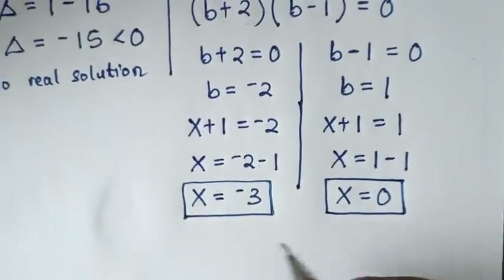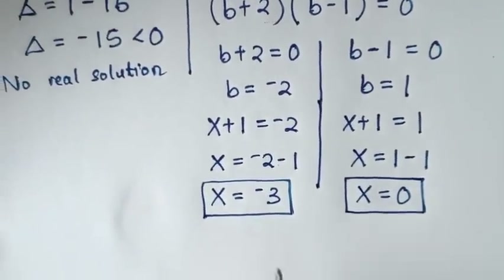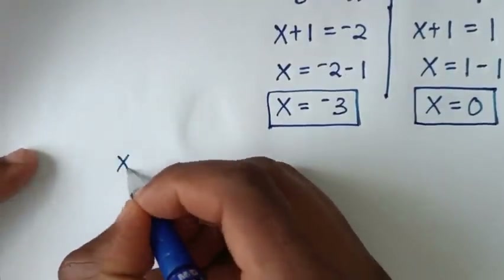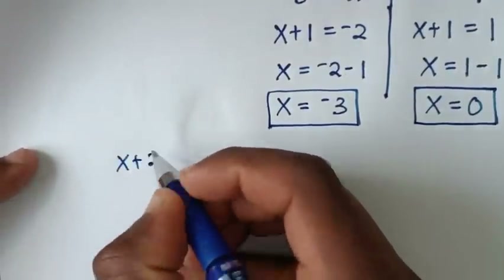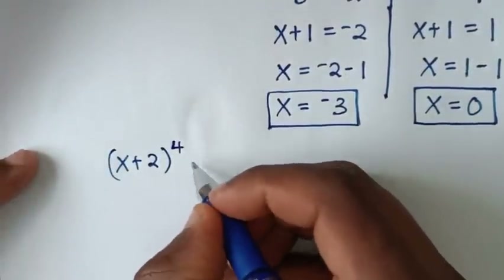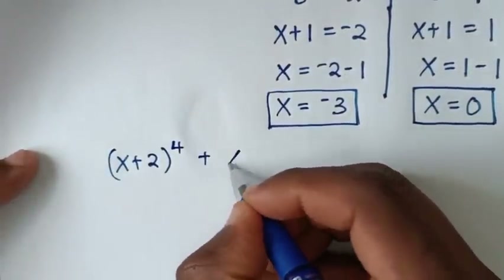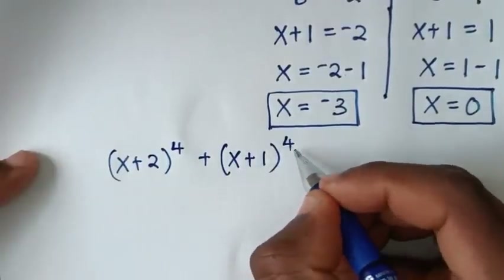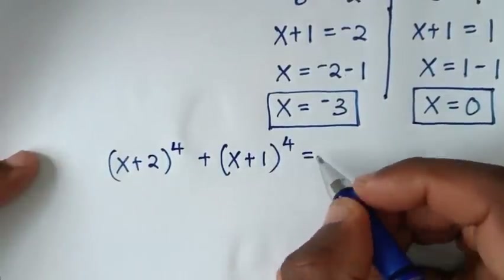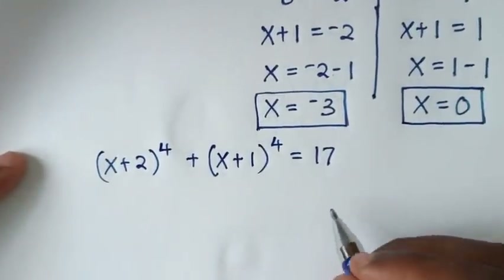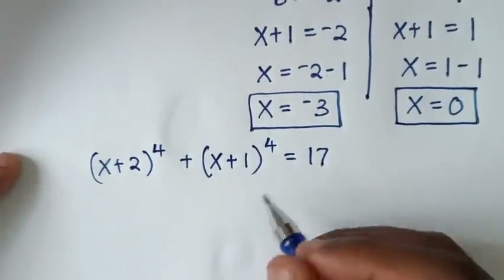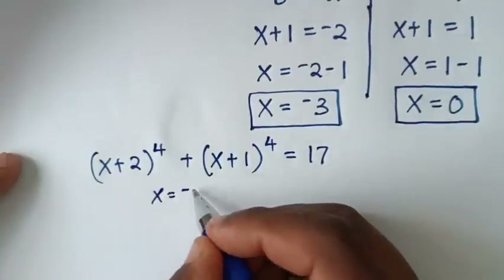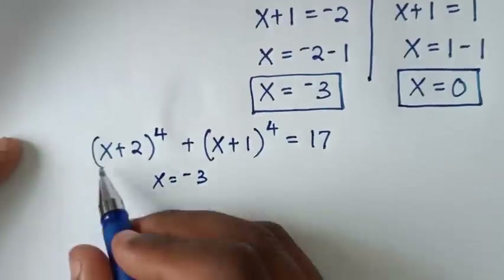Now let's check these solutions if they are correct. From our problem: (x+2)⁴ + (x+1)⁴ = 17. So let's check for x = -3.